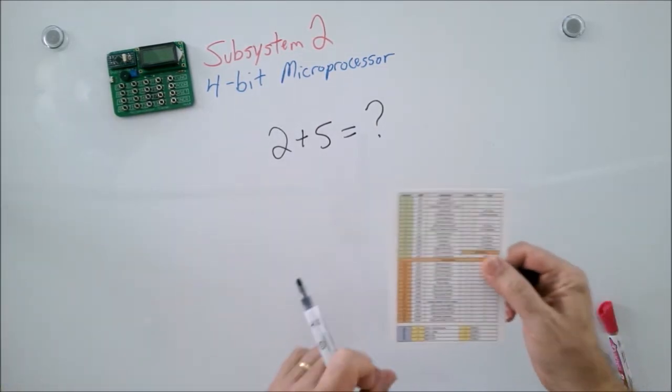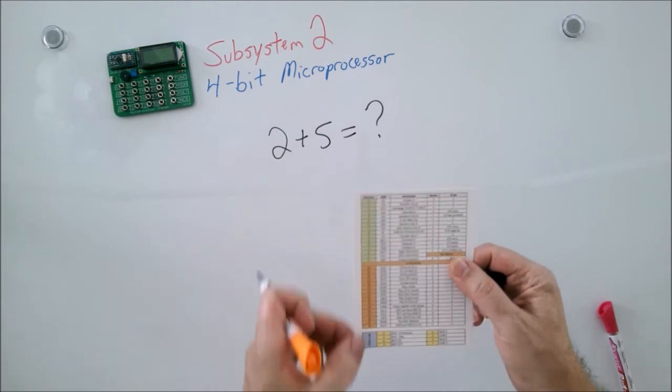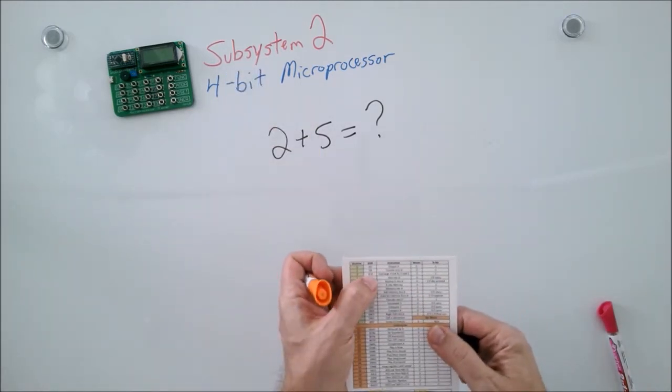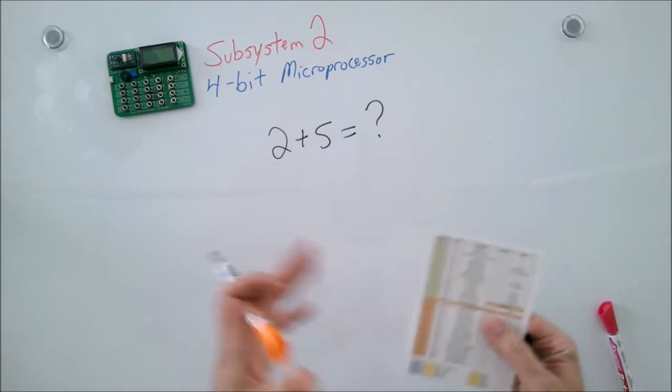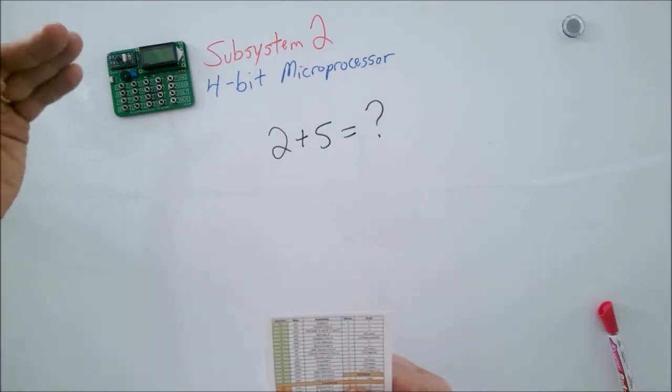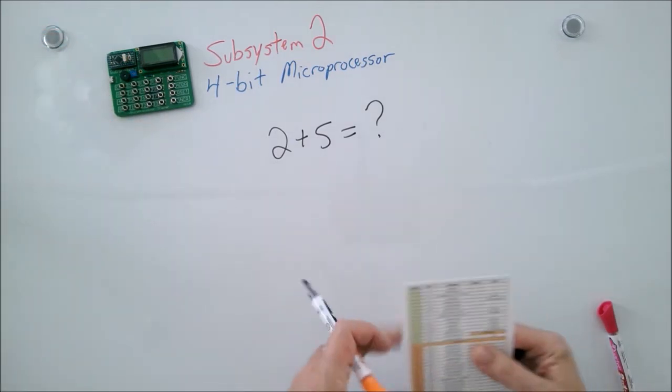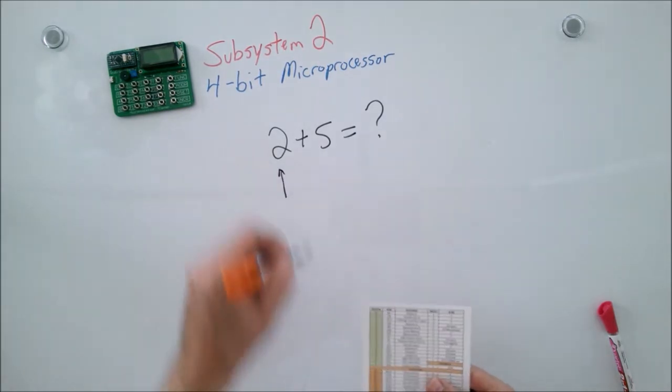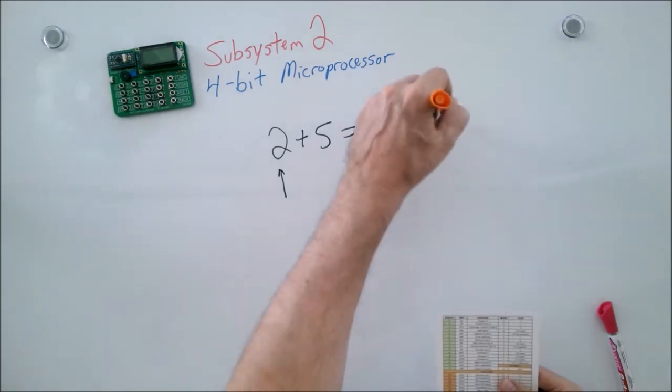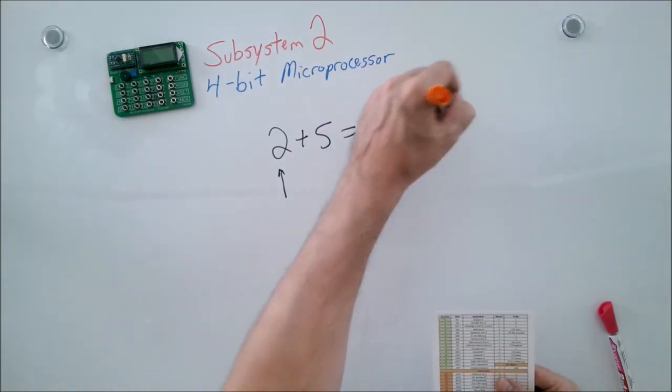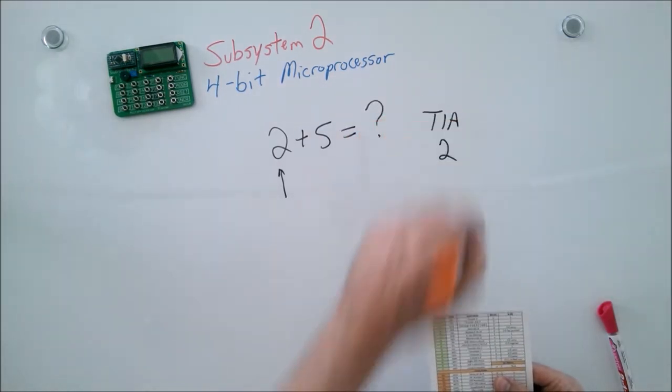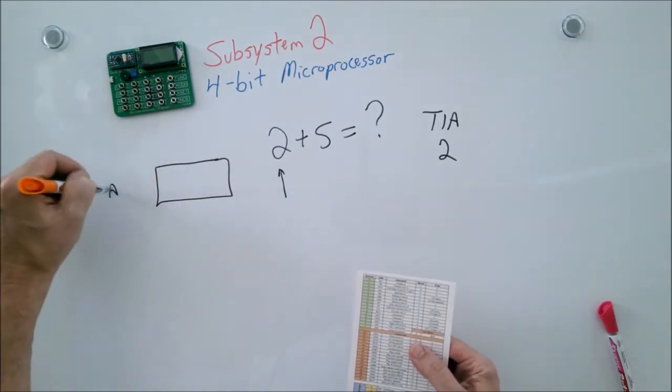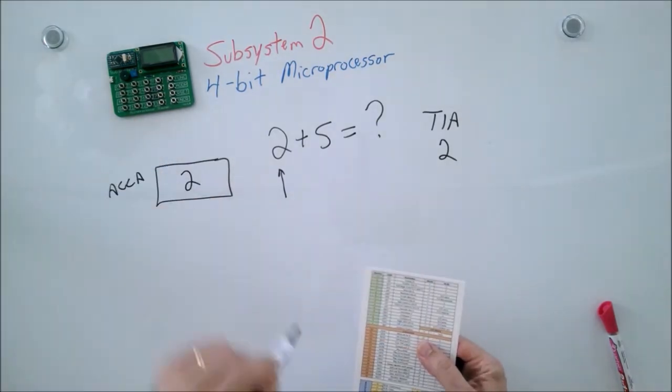If we look at our instruction card, this gives us the 31 instructions available to our microprocessor. One of them I see is transfer into A. That's where the computer will take a number that we want and transfer it directly into accumulator A. In this case, this would be the number I would want to go in. So let's say that's our first one. Transfer into A the number two. So now our accumulator A has the number two.